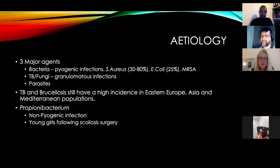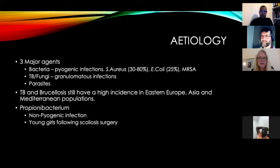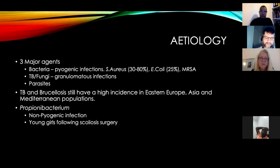The main agents are bacteria, usually causing a pyogenic infection — the main one being Staph aureus, with E. coli secondary to UTI coming second. In some areas, MRSA is also a problem. Granulomatous infections include TB and fungi, and less common are parasites. Depending on the population, TB may be a high consideration. Propionibacterium causes a non-pyogenic infection — it occurs in shoulder surgery and in young girls following scoliosis surgery, particularly those with significant acne.